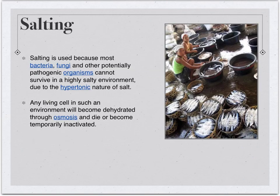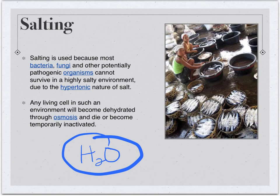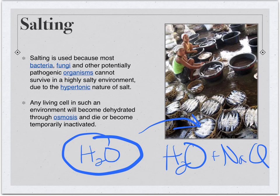Salting creates an environment that bacteria cannot survive in. Bacteria contain water in their cells, but if surrounded by heavily salted water, osmosis causes water to flow out of the bacterial cell to equilibrate the salt concentrations on either side of the cell wall. This dehydrates and ultimately kills the bacteria, preserving the food.